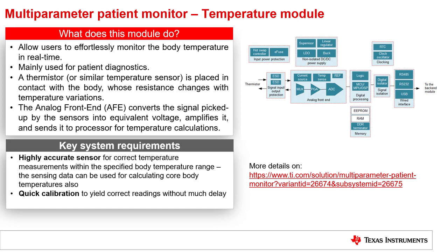The key requirements for the temperature module are: a highly accurate sensor for correct temperature measurements within the specified body temperature range — the sensing data can also be used to calculate core body temperatures — and quick calibration, to yield correct readings without much delay. A common block diagram for such temperature modules is also shown in the slide.